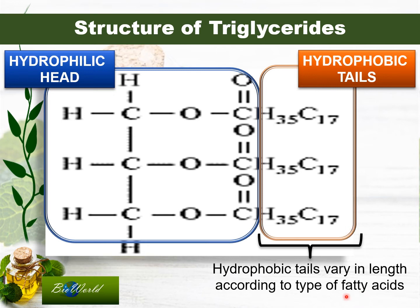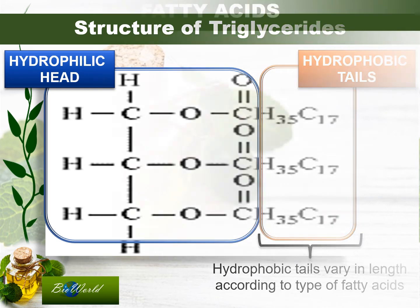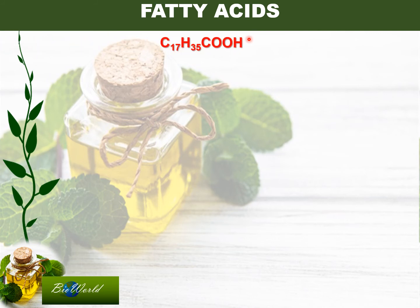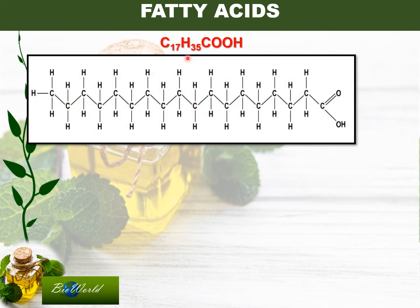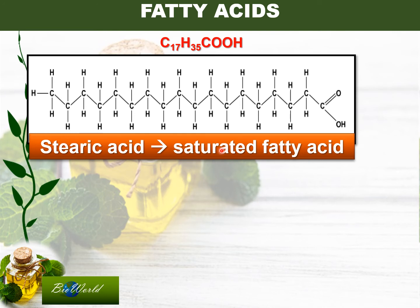Let's have a look at the fatty acids. The fatty acid here is C17H35COOH. Drawing out the full carbon-17, H-35, COOH gives the full length of the fatty acid chain, which is usually simplified in diagrams. When we draw the full diagram, all the carbons have four bonds. This is known as a saturated fatty acid, and its actual name is stearic acid.